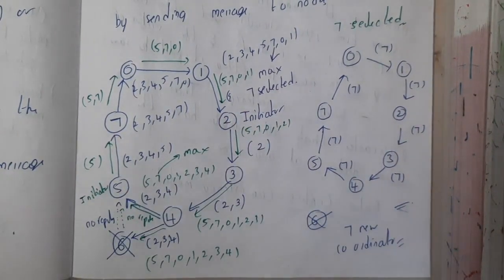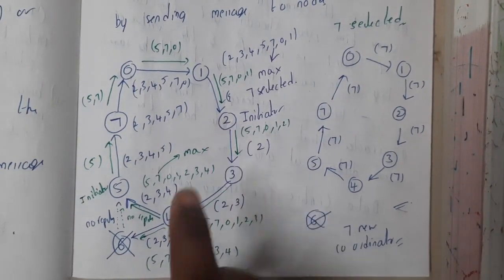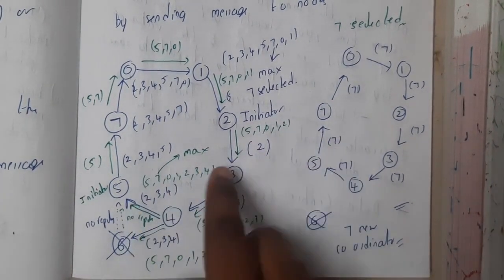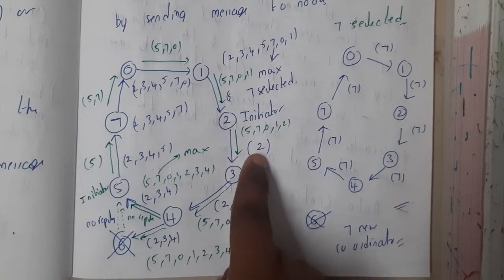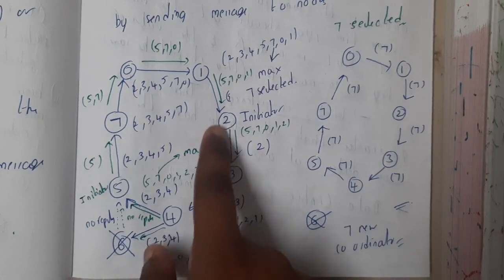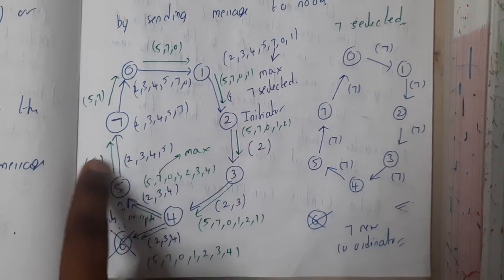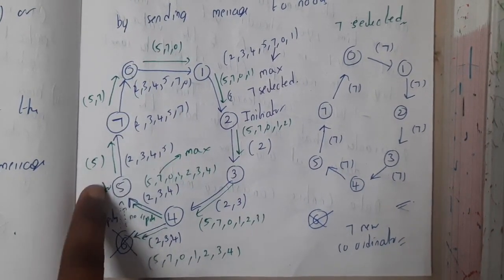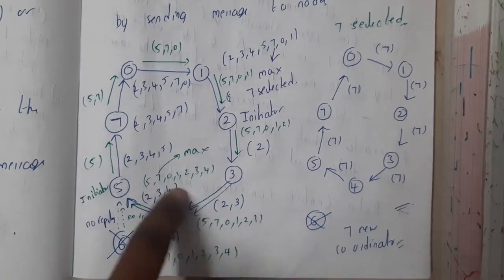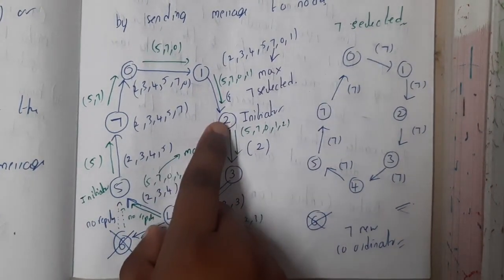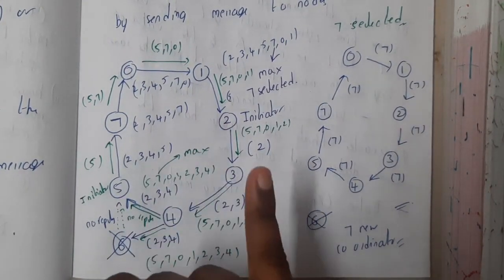An initiator is someone who adds their number into a list and sends the message. As you observe, the blue line is of two and the green line is of five. If five initiated, this will be the result, and if two initiated, this blue line will be the result. So two creates a list and pushes its value. Two has been pushed, now it visits three.